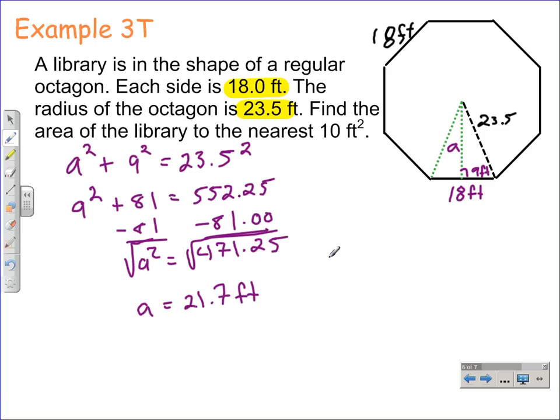So we can apply the area formula now for a regular polygon. The area is equal to one-half the length of the apothem, which is 21.7, times the perimeter.